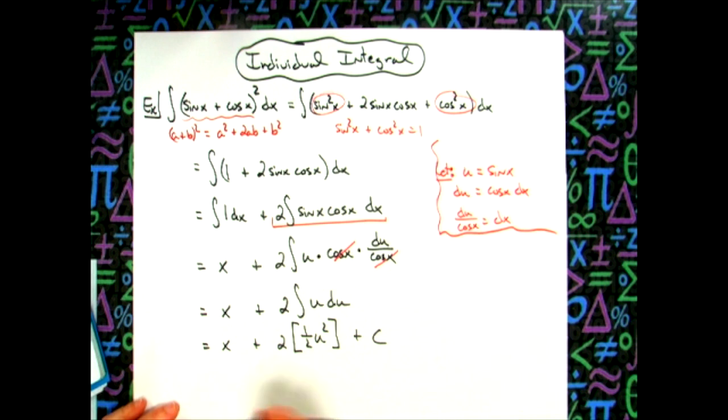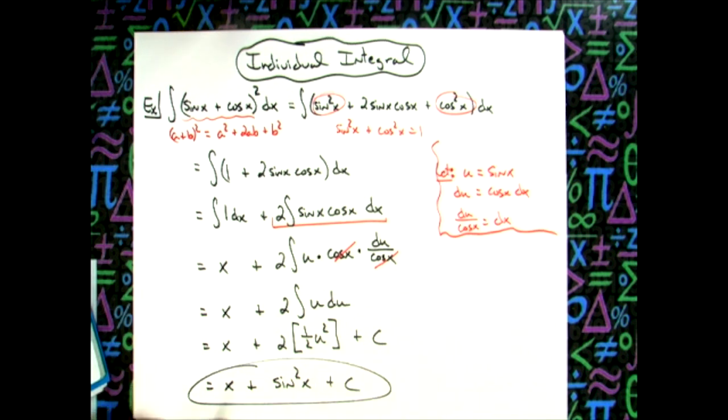If we go through and do a little bit of simplifying here, 2 times one half, that's going to be a 1. And then let's go ahead and replace u in this next line. So we're going to have the x here. These two things are 1. Replacing u with sine, we'll have sine squared x and then a plus c.